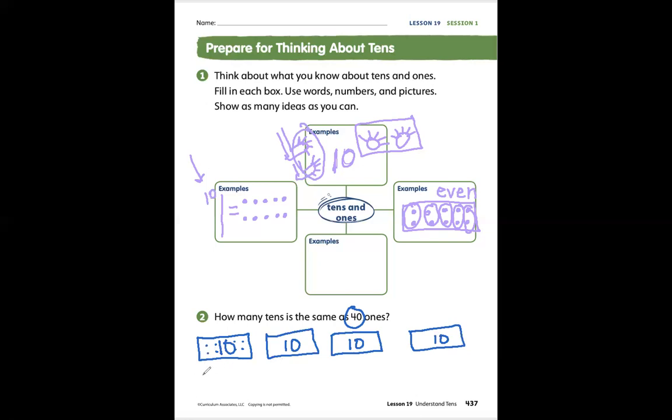I could draw all of my ones out like this: one through ten, 11 through 20, 21 through 30, 31 through 40. So here I can see I can still count by tens: 10, 20, 30, 40. Counting by tens is fast and it takes a lot less time than counting by ones.